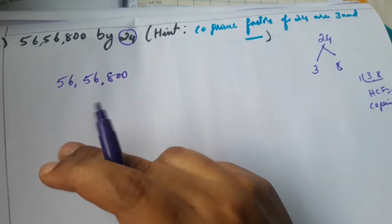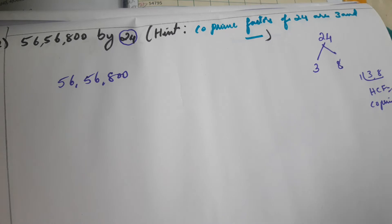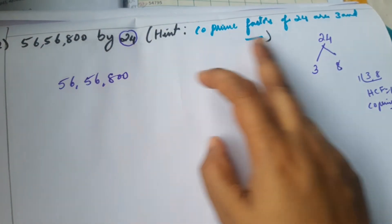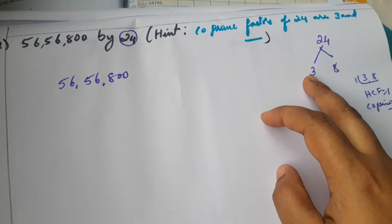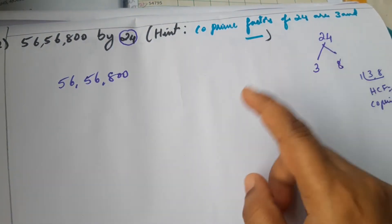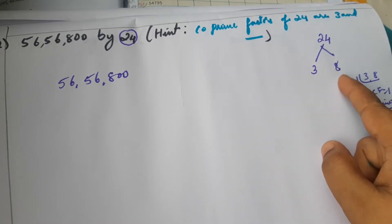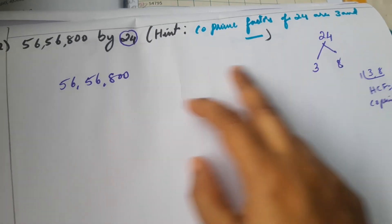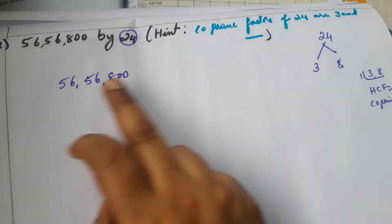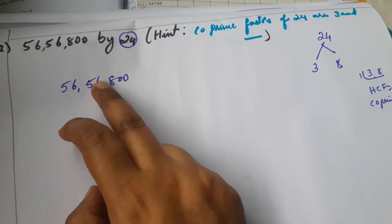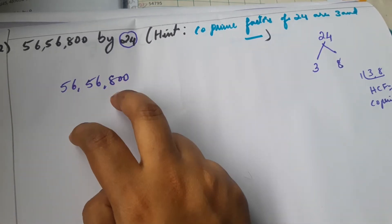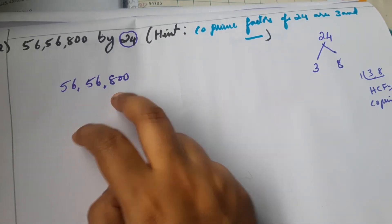We apply divisibility rules using the co-prime factors 3 and 8. Since 3 and 8 have a common factor of 1, they are co-prime. The rule for 3: the sum of the digits of the number should be divisible by 3, then that whole number is divisible by 3.